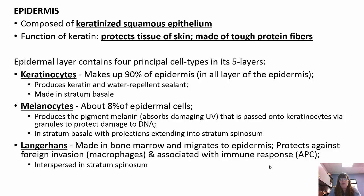Melanocytes make up about 8% of the epidermal cells and produce the pigment melanin, which determines our skin color and hair color. They absorb UV light, which is why it's dangerous to go out in the sun too often without protection — UV light damages our DNA. The whole point of sunscreen is to protect our skin from penetrating UV light, which is why they say avoid tanning, as you could damage your DNA and get skin cancer.